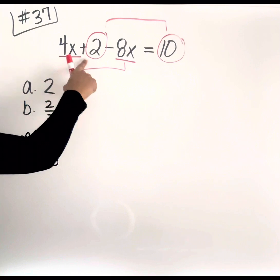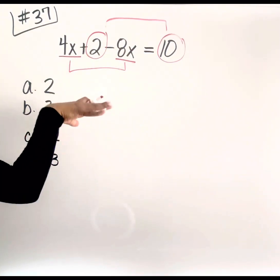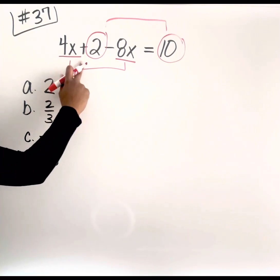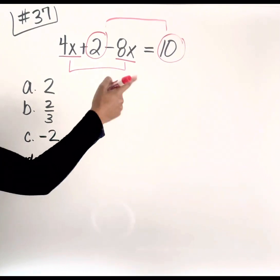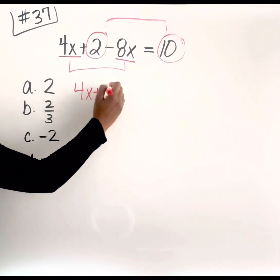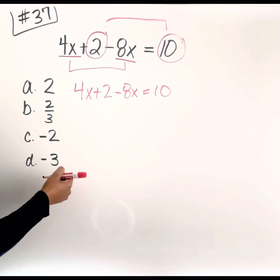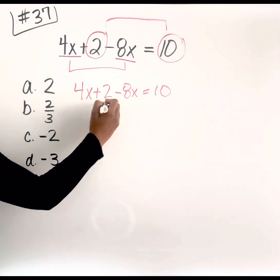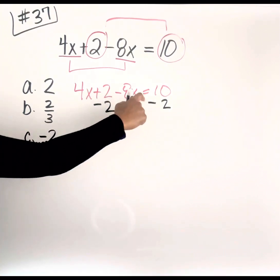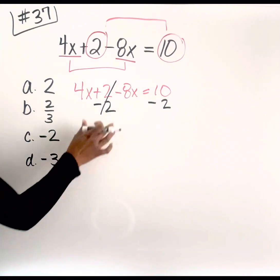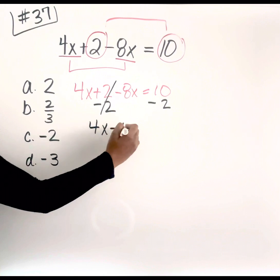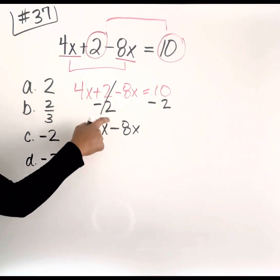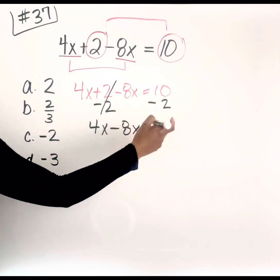I'm going to move the 2 to the opposite side and then combine my like terms on the left. Remember, when working with equations, always do the inverse or opposite of what you see. Since this is plus 2, in order to move it to the opposite side, I'm going to subtract. So we write 4X plus 2 minus 8X equals 10, then subtract 2 from both sides. Those cancel out. We bring down 4X minus 8X — the minus sign was in front of the 8X, not the 2, so don't bring that plus sign down. And 10 minus 2 gives us 8.